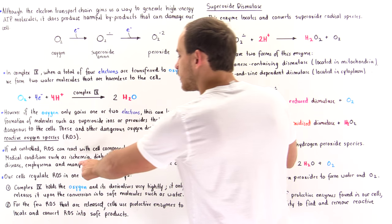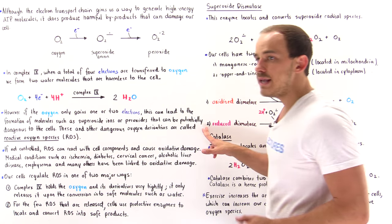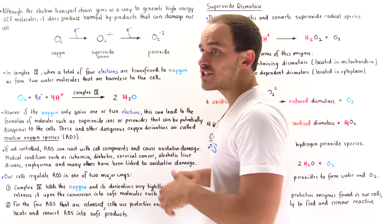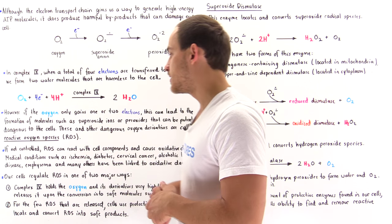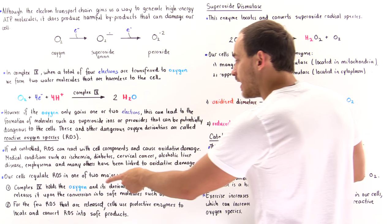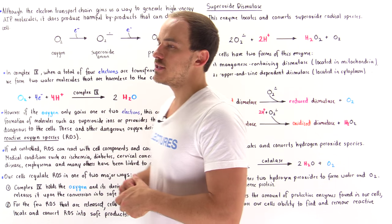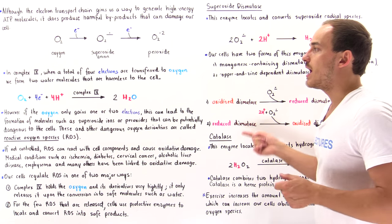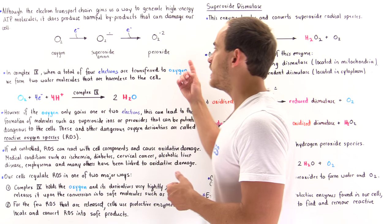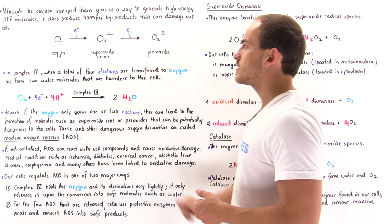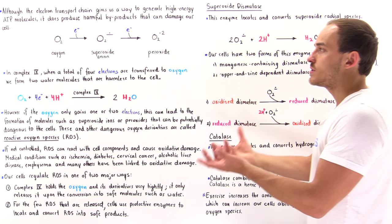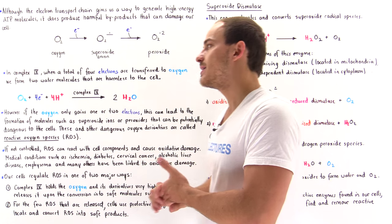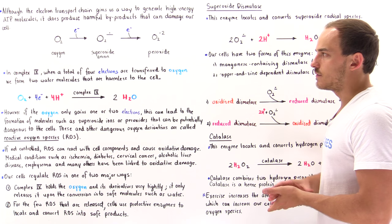Specific conditions linked to oxidative damage include ischemia, diabetes, cervical cancer, liver damage from alcohol overconsumption, emphysema, and many other diseases. These peroxide and superoxide anions react with components of our cells — such as DNA and proteins — and that can cause detrimental effects.